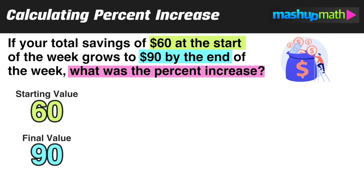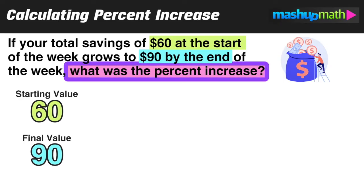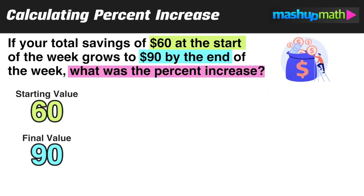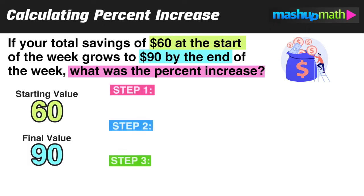The starting value is 60 and the final value is 90, because we started with $60 at the beginning of the week and ended with $90 by the end. As long as we can correctly identify the starting value and the final value, we can find the percent increase. Now let's work through the three steps.